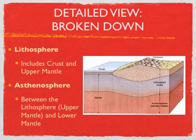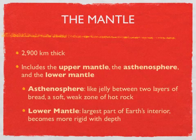The asthenosphere is the layer between the lithosphere and the lower mantle. The mantle is very thick — it includes the upper mantle, the asthenosphere, and the lower mantle. The best way to think of the asthenosphere is like jelly between two layers of bread. It's kind of soft and weak, and it's molten or melted hot rock.